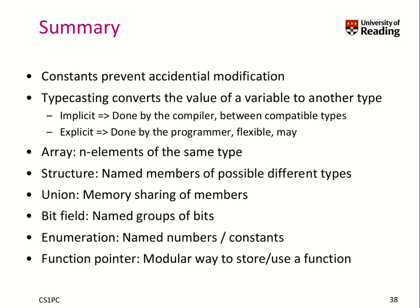Then we had union, which is similar to a structure, but instead all these types share one memory location, so we can only store one of them. Then we had bitfields, which are named groups of individual bits, useful for network protocols and so forth. Then we had enumeration, which are named numbers and constants.